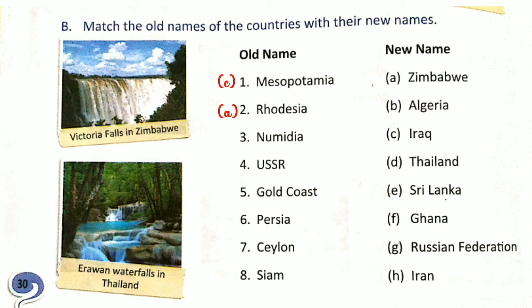Number 3, Numidia. Numidia is the old name and new name is Algeria. Algeria is the new name of Numidia. Number 4, USSR. USSR is the old name and the new name is Russian Federation. Russian Federation is the new name of USSR.